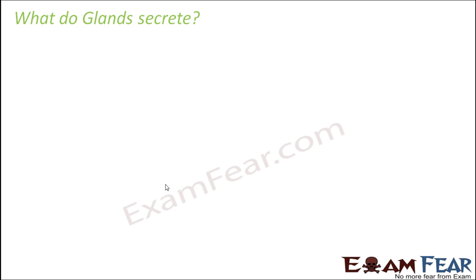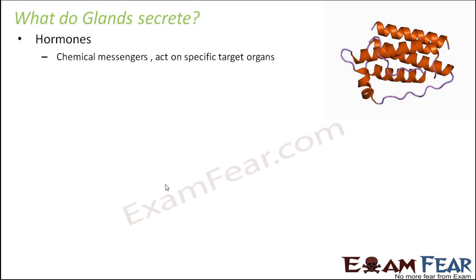Now, what do glands secrete? They can secrete hormones. Hormones are chemical messengers that act on specific target organs. They will not act on all organs of the body; they act on specific organs depending upon the type of hormone. That is why there are different types of hormones inside our body, produced by different organs, and those hormones result in some effect on some specific organs.